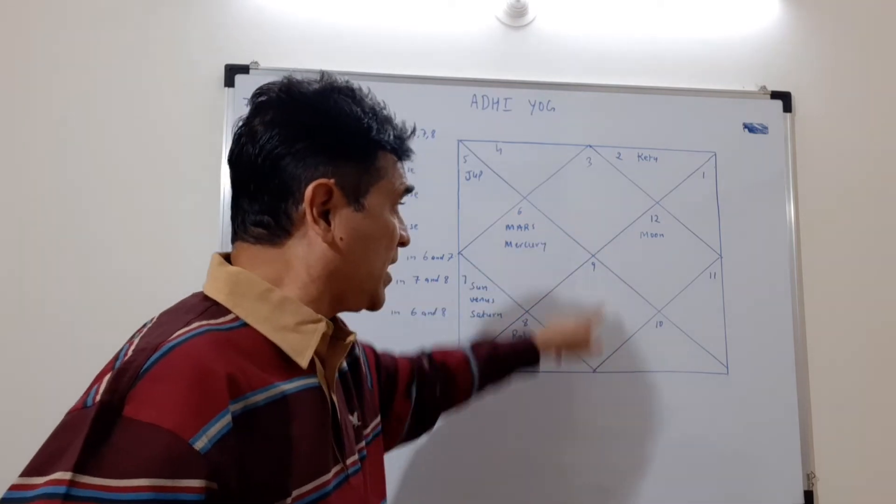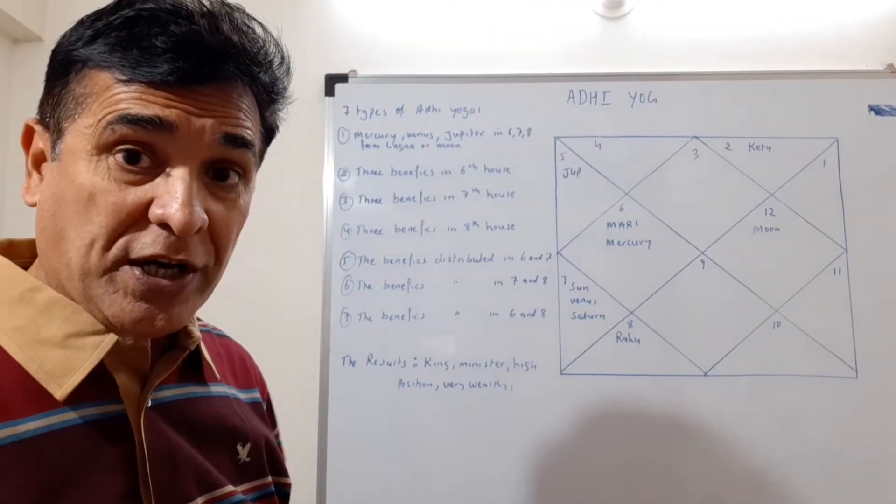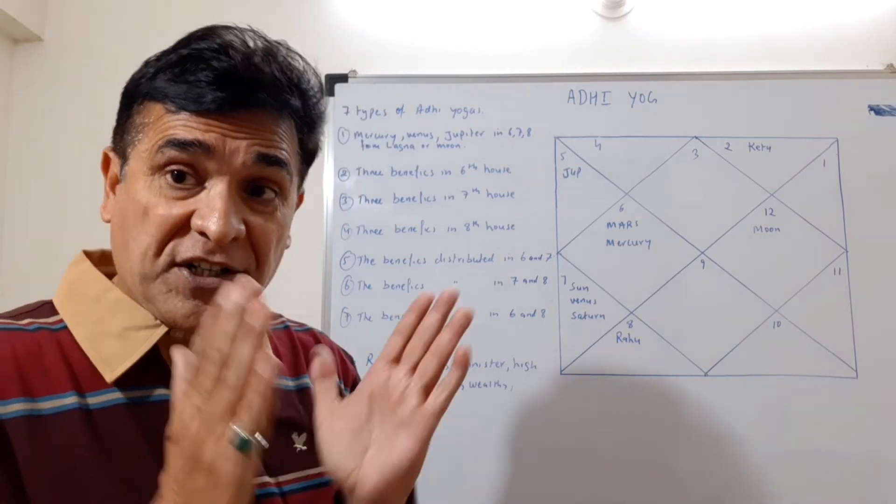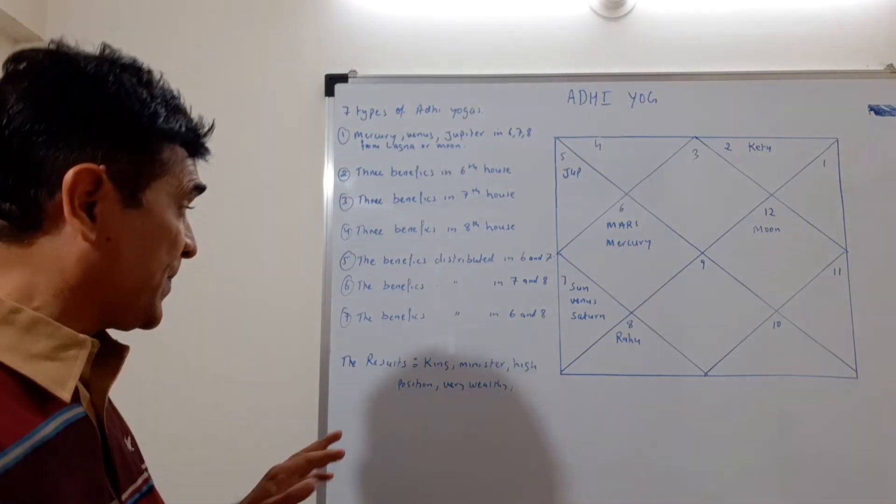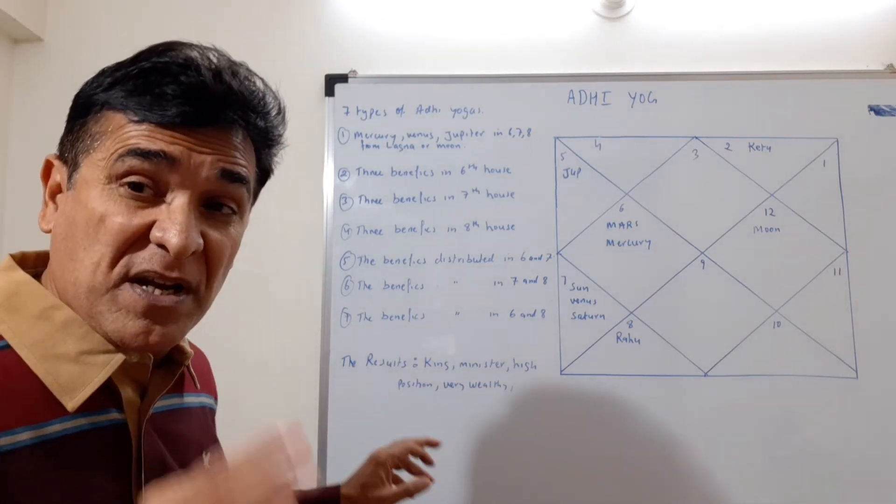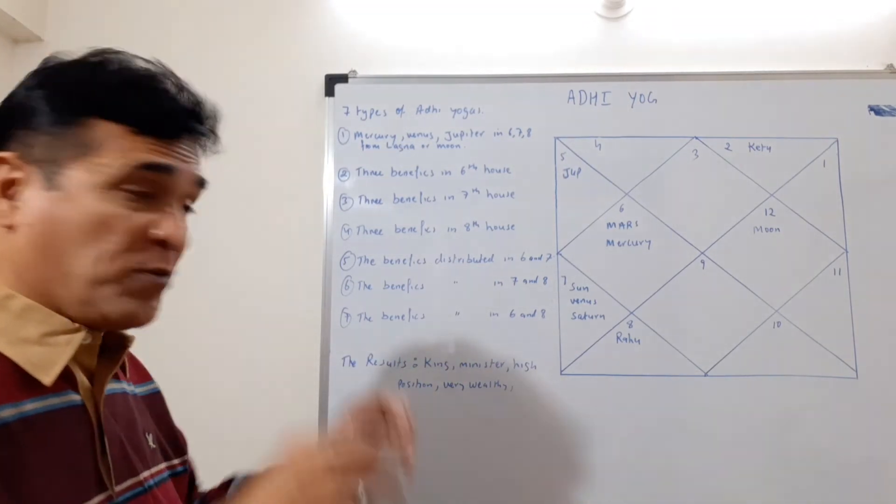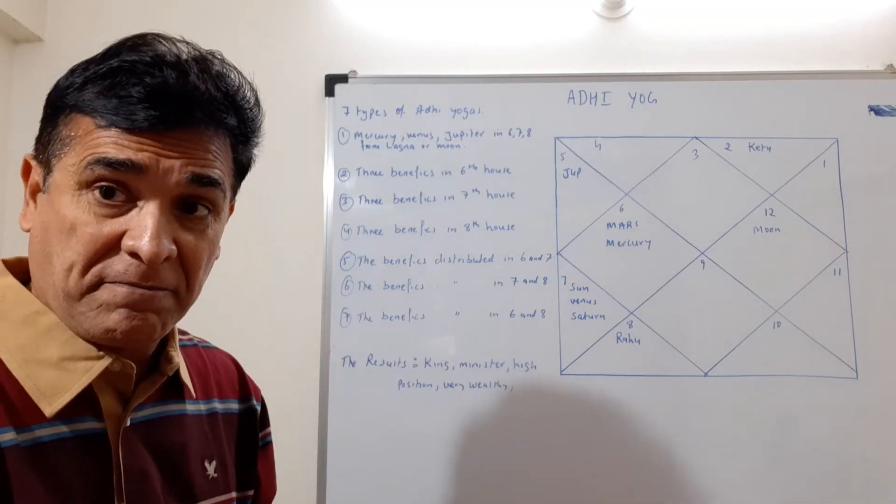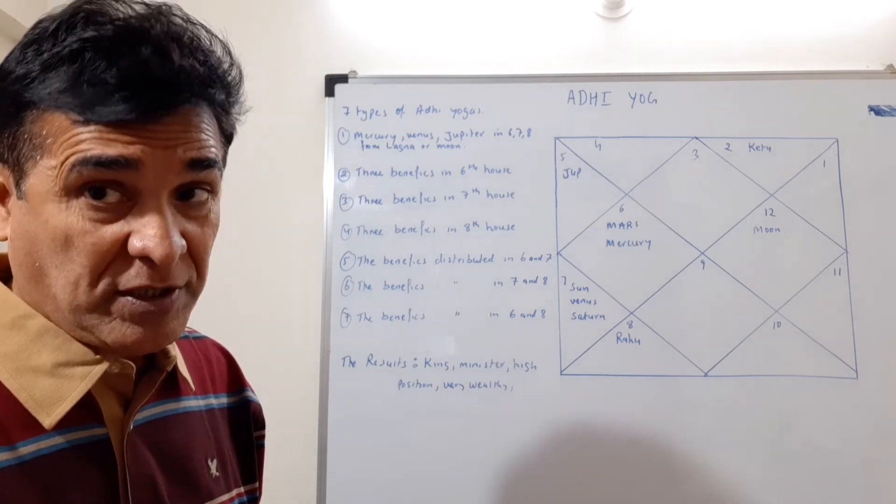Now if this is in your chart, what does it mean? The result would be you will be a king, you will be a minister, you would be in a very high position - millionaire, billionaire. This is what is the Adhi Yoga. Now tell me who doesn't want this?